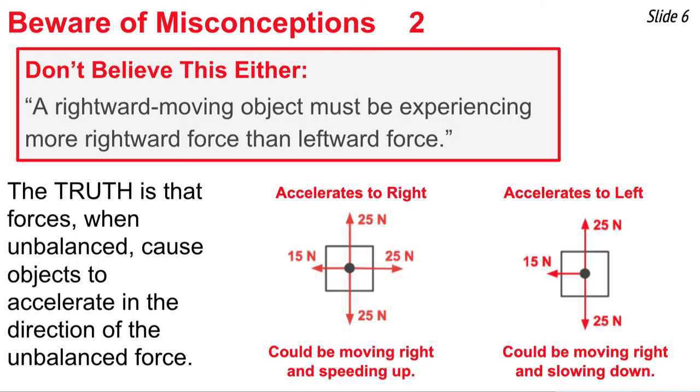We see two force diagrams here. In the one on the left, there's more force to the right than to the left. This is an object that we know for certain is accelerating to the right. It could be moving in either direction, but if it's moving to the right, it's speeding up. And the second diagram shows more force to the left than to the right. This is an object that's definitely accelerating to the left, which means that it could be moving to the right and slowing down. This second force diagram is representative of a car that moves to the right and slows down, or of a book that moves across a table to the right and slows down. So we see here that an object can move to the right even though there's not more rightward force than leftward force.